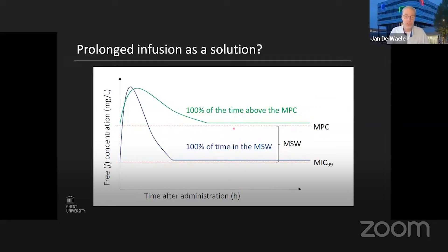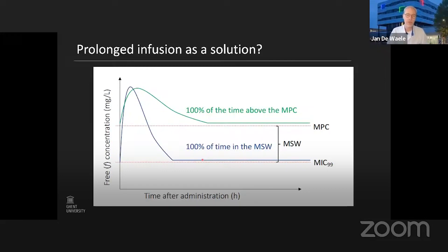Of course, if you are stuck within the mutant selection window — an inherent risk — you may actually allow mutants to be selected. The concepts we've learned to optimize treatment can also be applied to prevent the development of resistance, and I'm sure we'll learn more about this in the future.